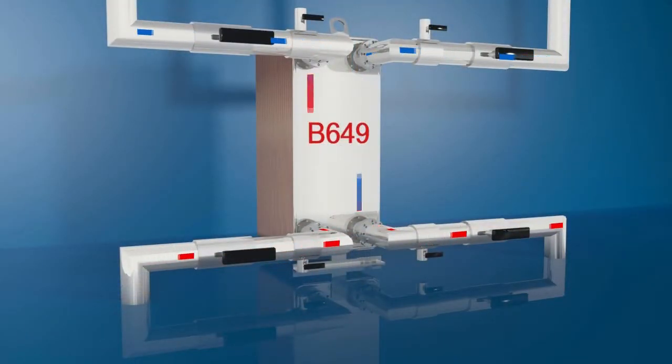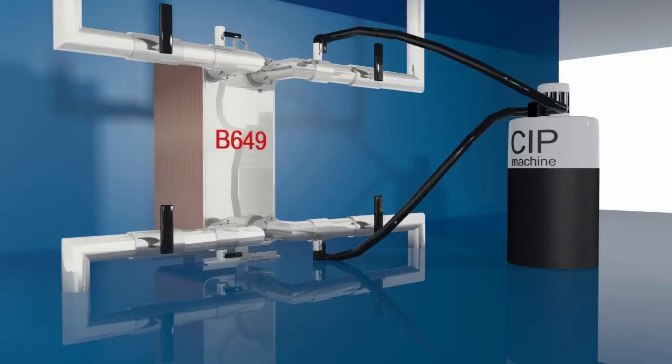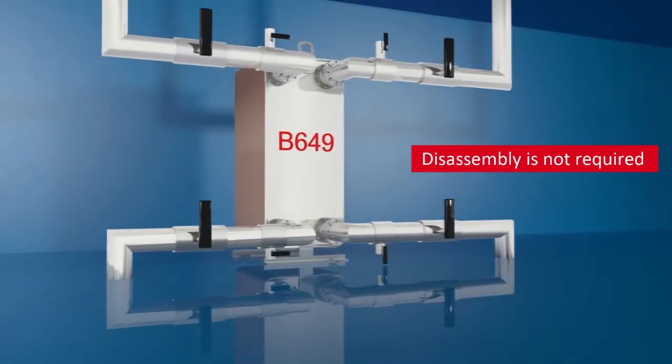A BPHE is normally self-cleaning thanks to high turbulent flows. In applications with a risk of fouling or scaling, cleaning may be required to maintain efficiency. This is achieved quickly and easily using cleaning in place. This is a way of cleaning the interior surfaces of closed systems by circulating a fluid. Disassembly is not required.